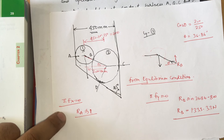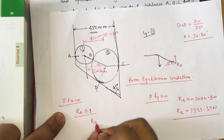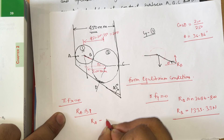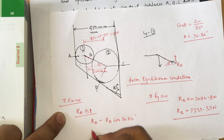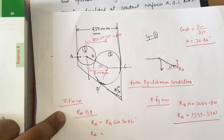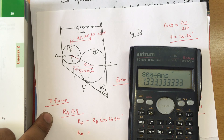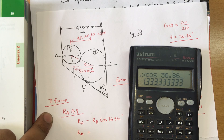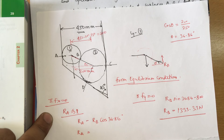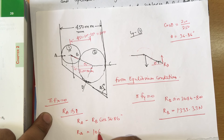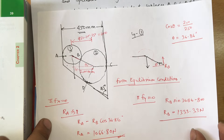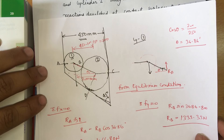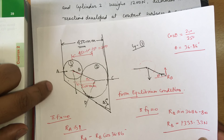Similarly, applying summation of Fx equals 0, Ra minus Rb cos 36.86° equals 0. So Ra equals Rb cos 36.86° equals 1333.33 times cos 36.86°, giving Ra equal to 1066.80 N.